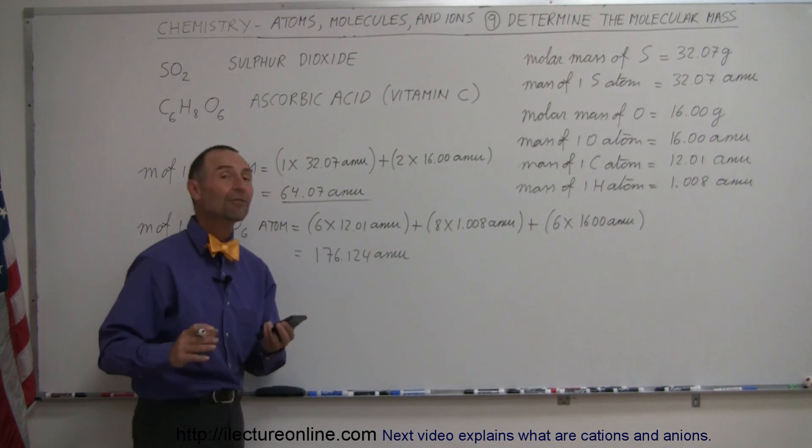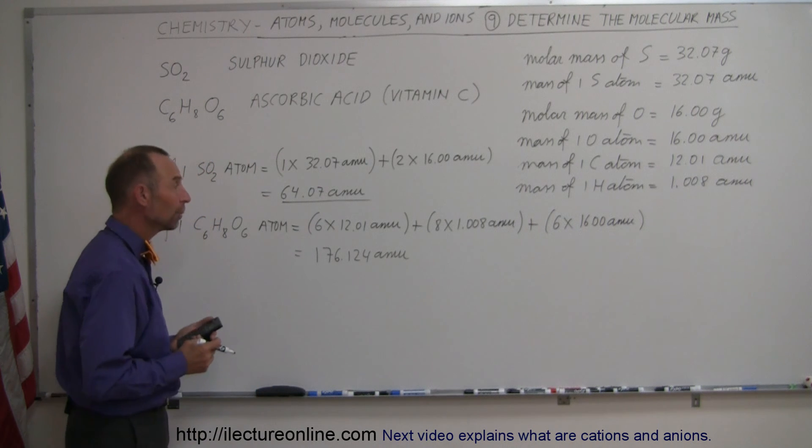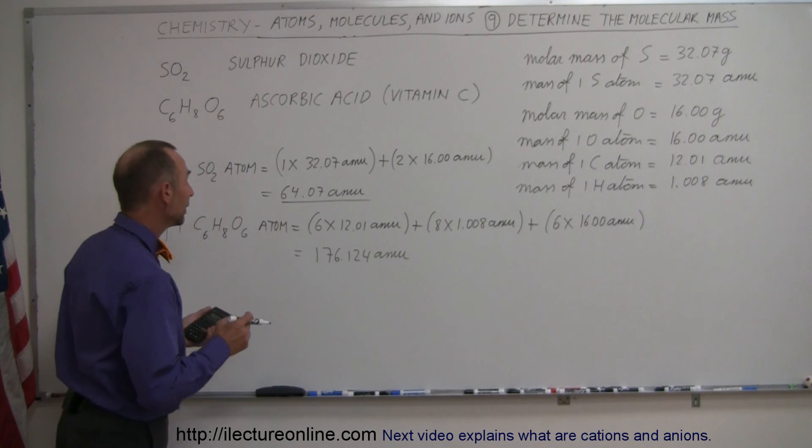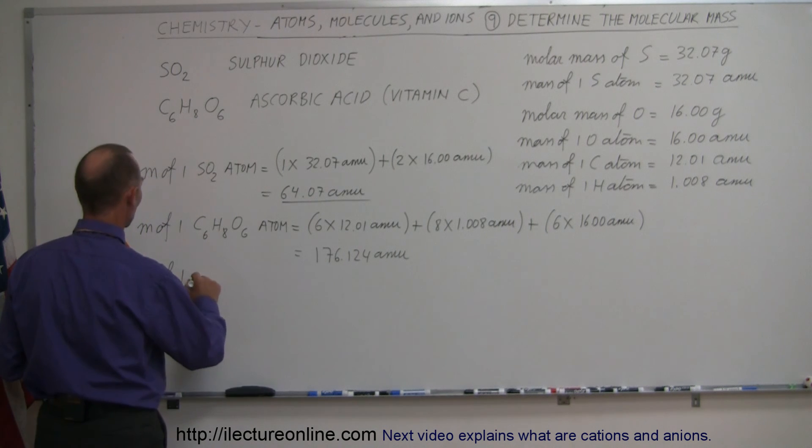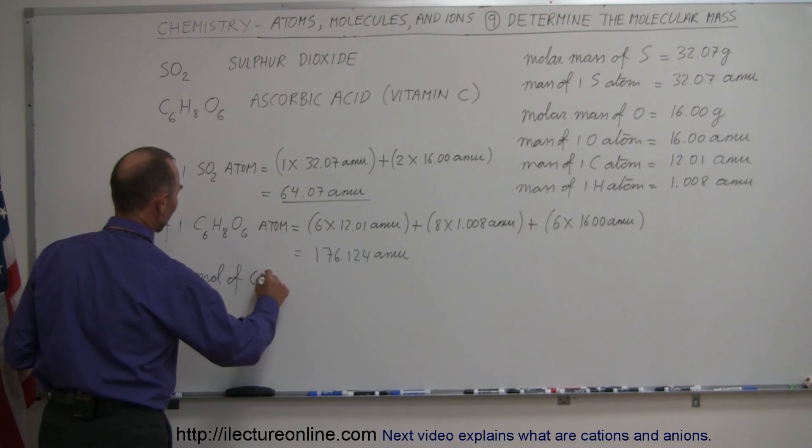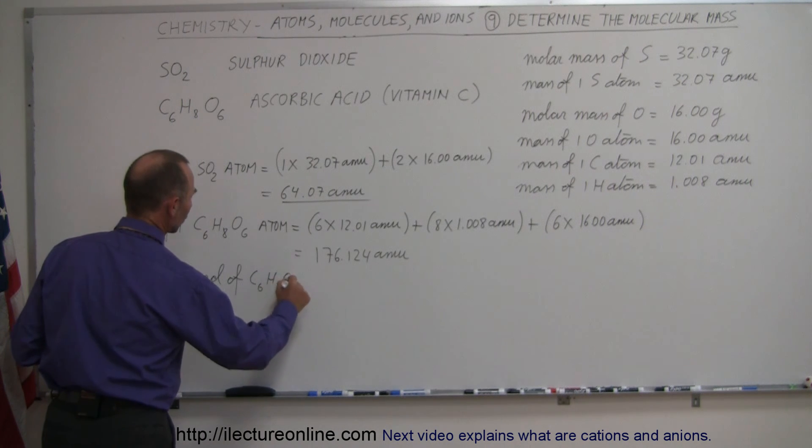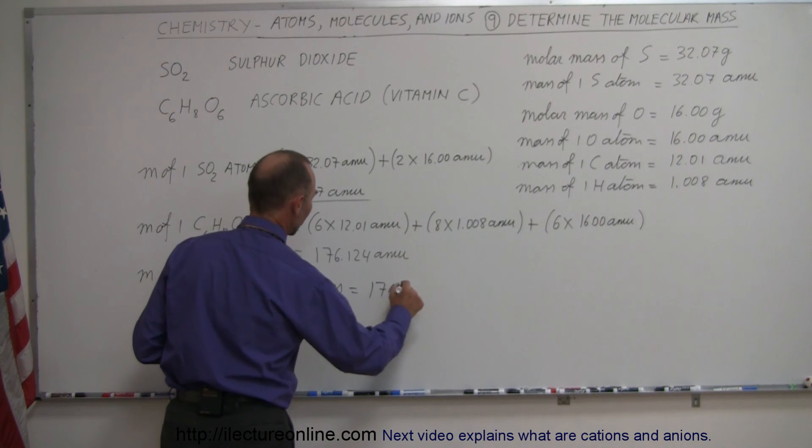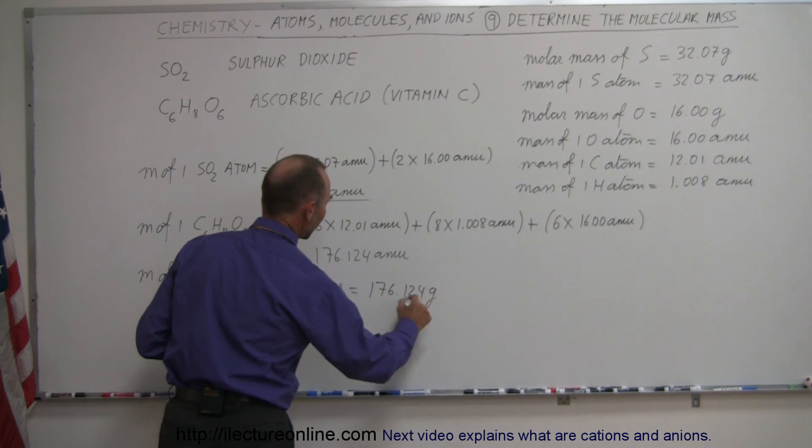Remember, that would be for the average, because there's of course going to be a different ratio of masses for individual atoms, but then, of course, if you want the mass of one mole of C6H8O6 atoms, a mole of those atoms, that would, of course, be 176.124 grams.